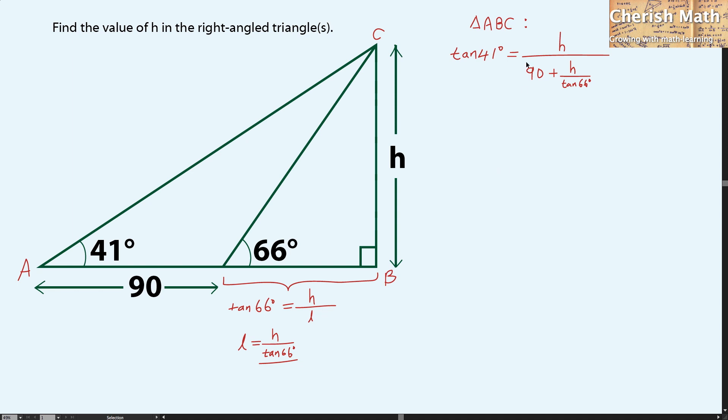And next, I'm going to cross multiply the denominator to tan 41 degrees. And that turns into 90 tan 41 degrees plus H tan 41 degrees divided by tan 66 degrees equals H. So, let me rearrange the whole thing here.